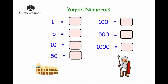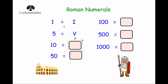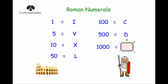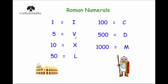I'm going to go through some of the common Roman numerals first of all. The number one in Roman numerals is the letter I. Five is the letter V. Ten is the letter X. Fifty is the letter L. One hundred is the letter C. Five hundred is the letter D. And a thousand is the letter M. These seven letters can be used to make lots of different combinations of numbers.